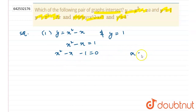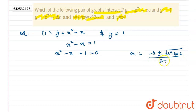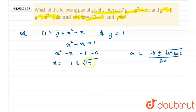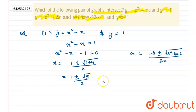Let's apply the quadratic formula: x = (-b ± √(b² - 4ac)) / 2a. Here it becomes x = (1 ± √(1 + 4)) / 2 = (1 ± √5) / 2. So the two roots are (1 + √5) / 2 and (1 - √5) / 2.